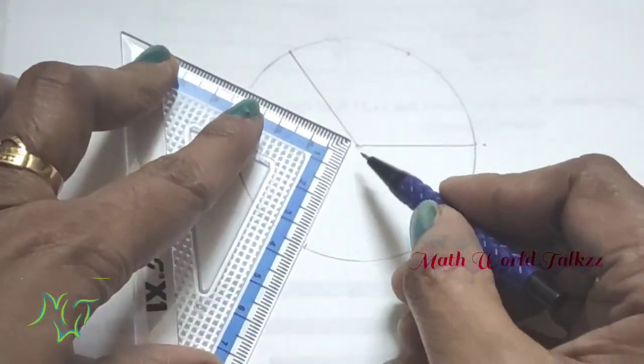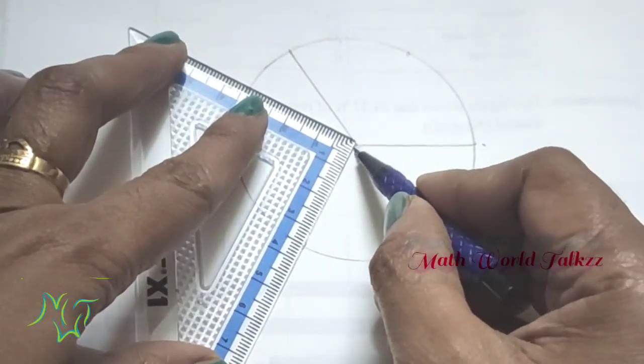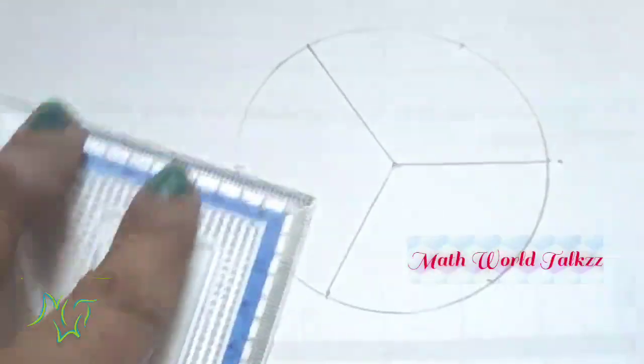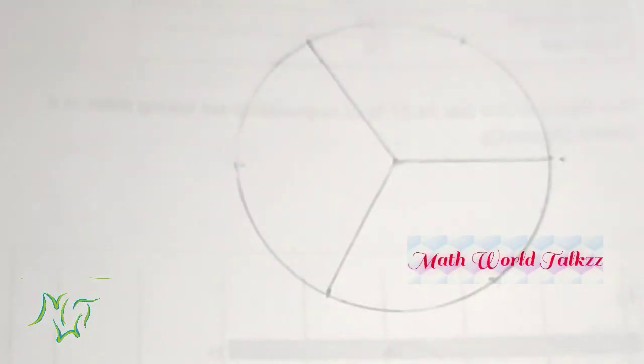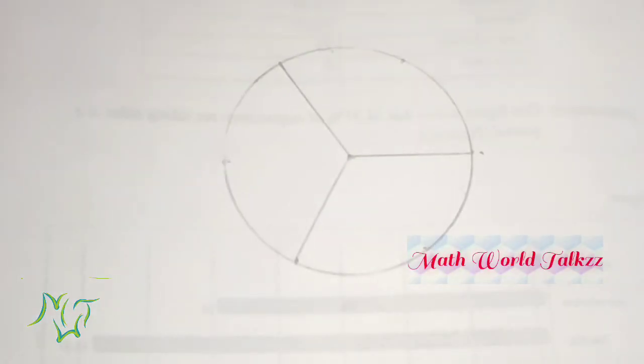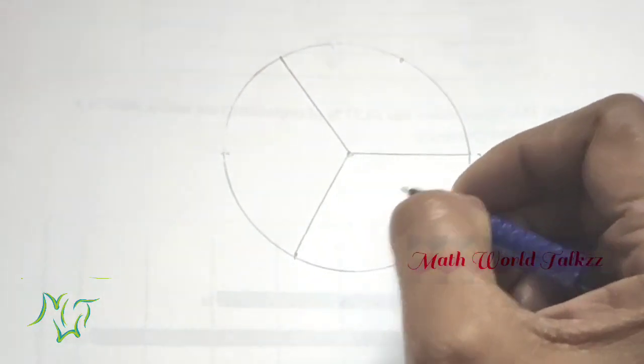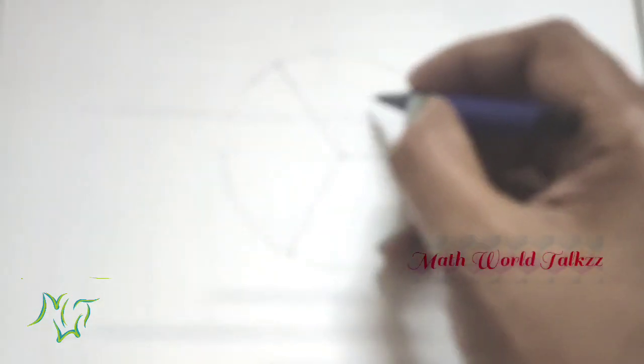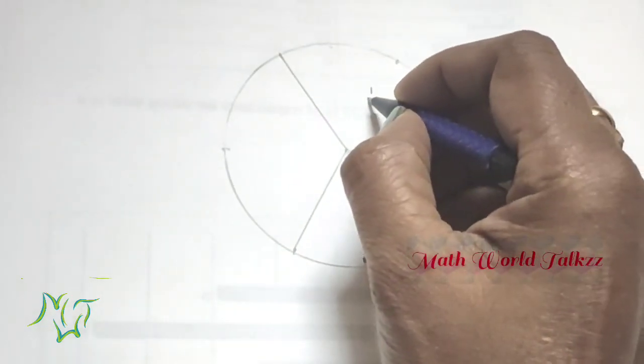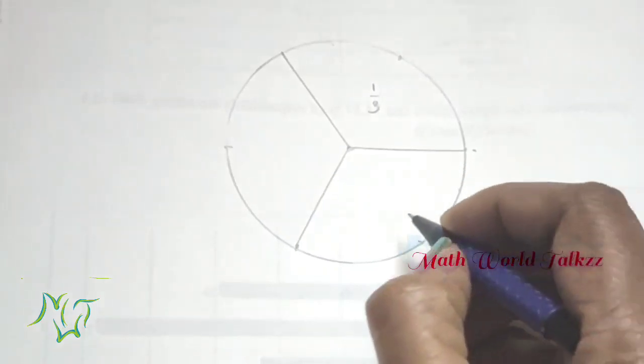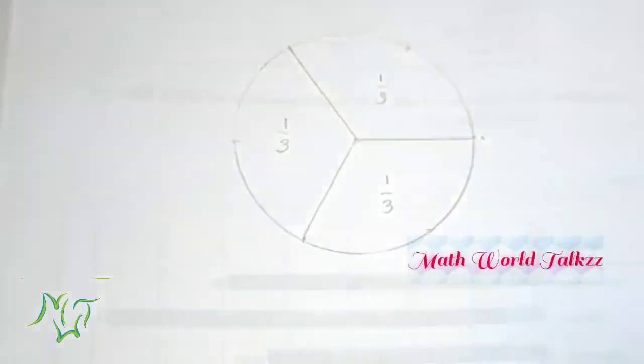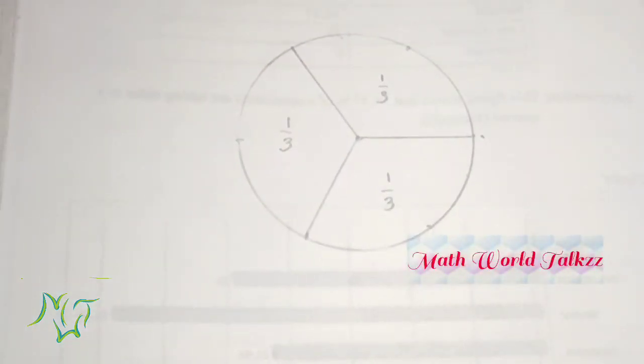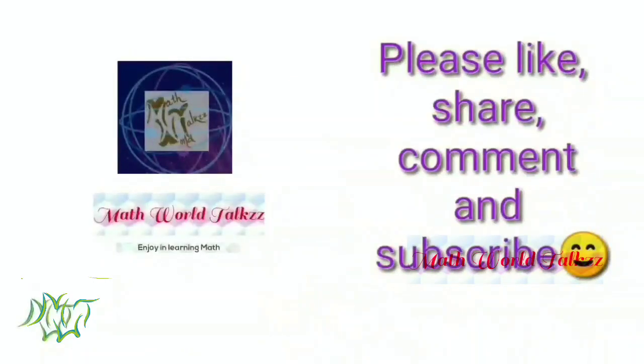Now the circle is divided into three equal parts. Then what is the fraction of each part? You can see one part among three equal parts, so this is one by three, here one by three, and here also one by three. That's all for today. Hope you all understood this class well. Thank you.